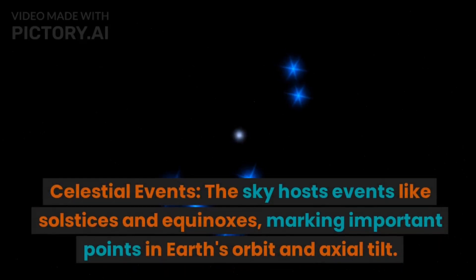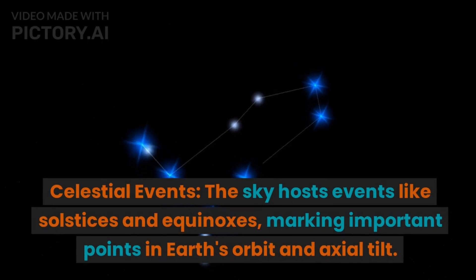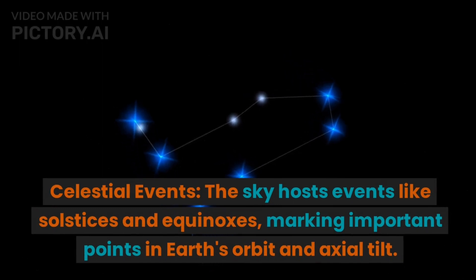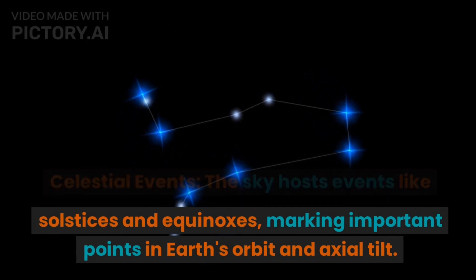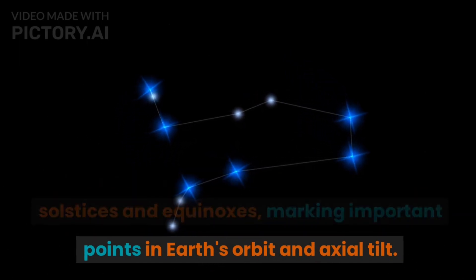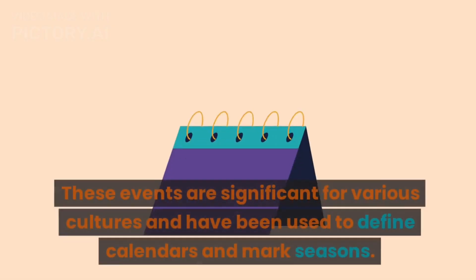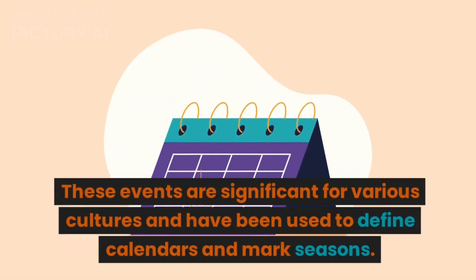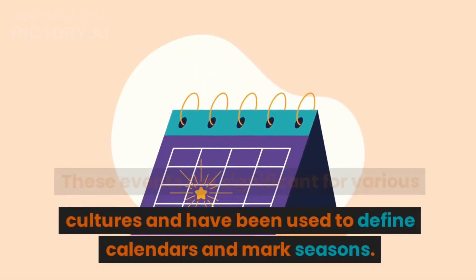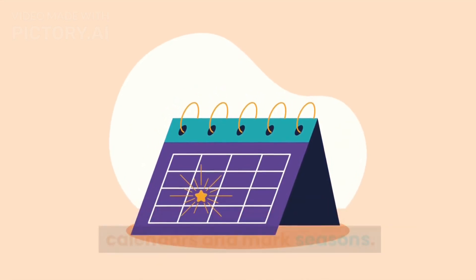Celestial Events. The sky hosts events like solstices and equinoxes, marking important points in Earth's orbit and axial tilt. These events are significant for various cultures and have been used to define calendars and mark seasons.